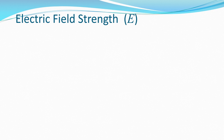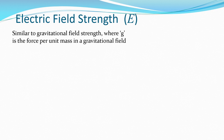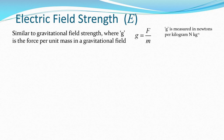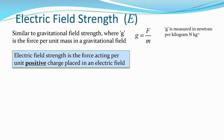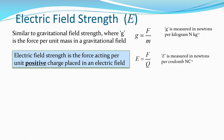Electric field strength is very similar to gravitational field strength, where g is the force per unit mass in a gravitational field: g equals f over m, measured in newtons per kilogram. In an electric field, the electric field strength is the force acting per unit positive charge placed within an electric field, with the similar equation e equals f over q, where e is measured in newtons per coulomb, as opposed to newtons per kilogram for gravitational field strength.